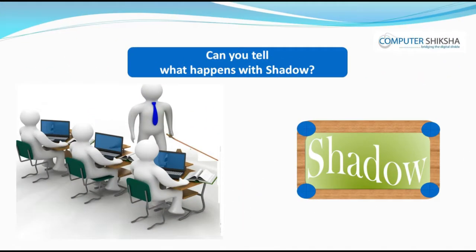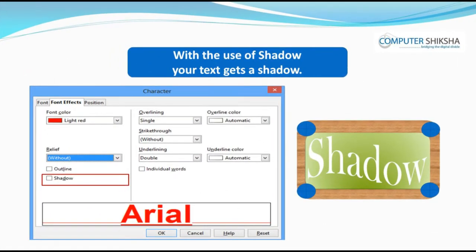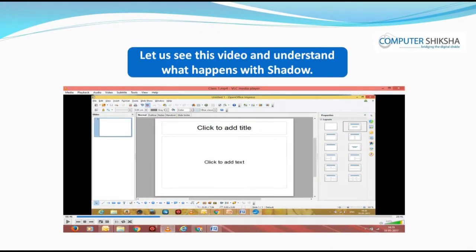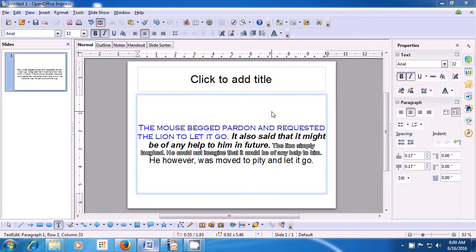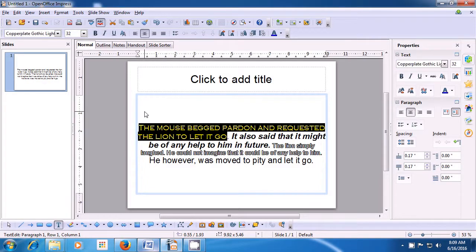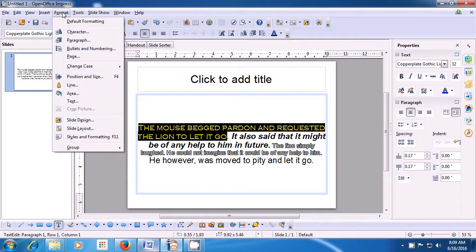Can you tell what happens with Shadow? With the use of Shadow, your text gets a shadow. Let us see this video and understand what happens with Shadow. Let us now see how we will apply Shadow to our selected text. To apply the Shadow, we first need to select the line or the text that we want to apply the Shadow to. As is being shown in the video, we have selected the line. Now bring your pointer to the menu bar and click on Format menu and click on the Character submenu.